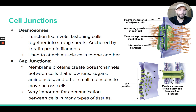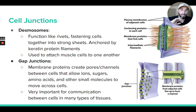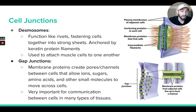Then there's gap junctions. Gap junctions are actually very similar to plasmodesmata, which are found in plants, but gap junctions are found in animal cells. Between adjacent animal cells, sometimes you'll have these tunnels — these protein structures that are holding the cells together that actually have a tunnel going between them. Those are called gap junctions. It's made up of proteins that are anchoring the two cells together, but there's actually a tunnel that goes between them so that things can very quickly and easily be transported between adjacent cells.